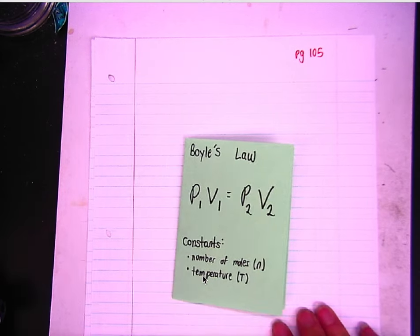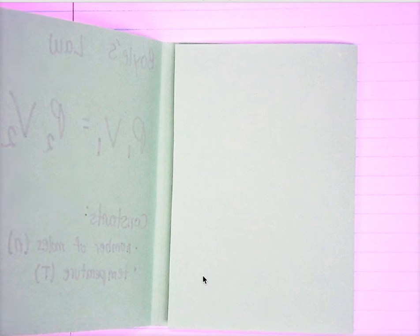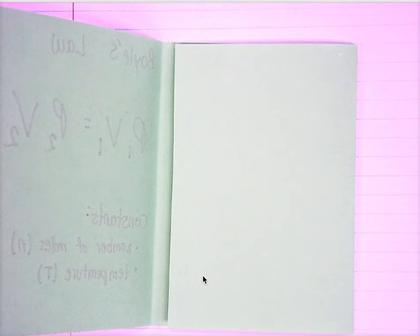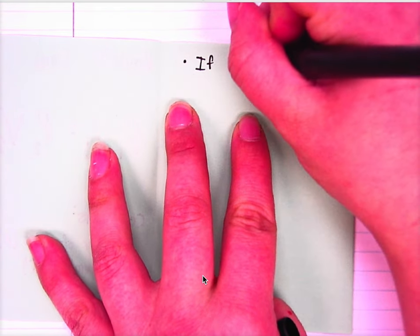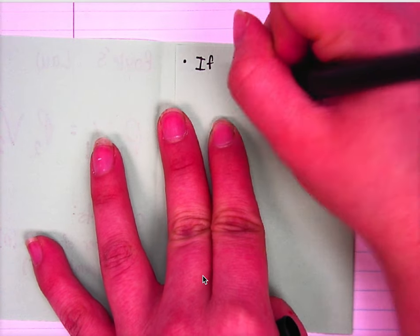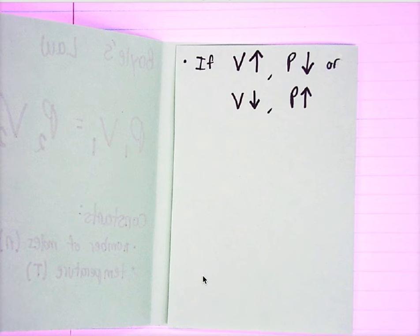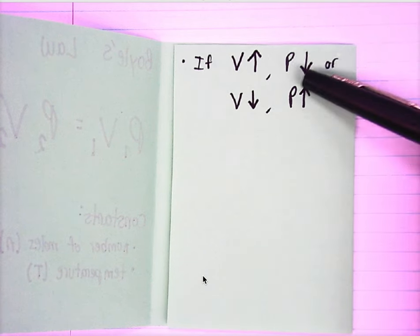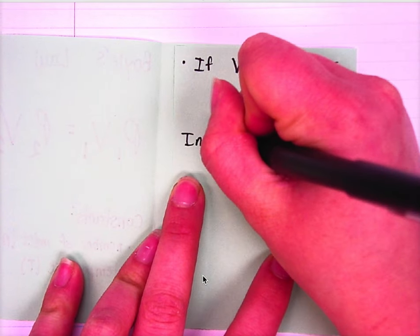Let's start with Boyle's Law. Boyle's Law relates pressure and volume. We typically can manipulate the volume easier than we can manipulate the pressure. They have an opposite relationship — if the volume increases, the pressure will decrease. Or if the volume decreases, pressure will increase, which you guys saw in the simulation. If the particles have more room to move, a bigger volume, they're not going to hit the walls as much, so the pressure is going to drop. Where if you give them less room to move, the pressure is going to increase. We call this an inverse relationship.